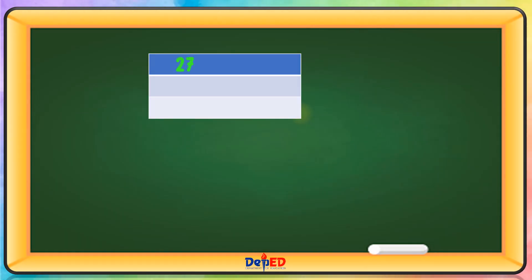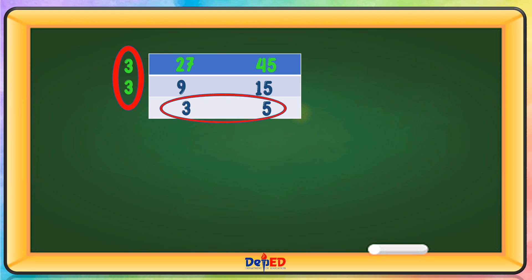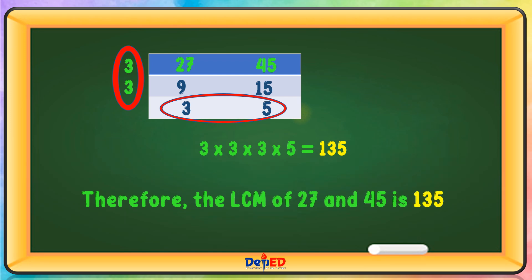We have 27 and 45. Using prime number 3: 27 divided by 3 equals 9, 45 divided by 3 equals 15. Multiply the prime numbers and remaining quotients: 3 times 3 times 3 times 3 times 5 equals 135. Therefore, the LCM of 27 and 45 is 135.